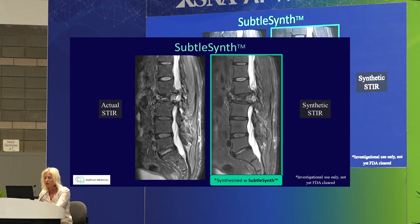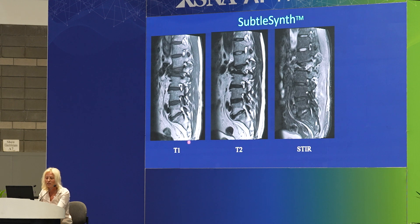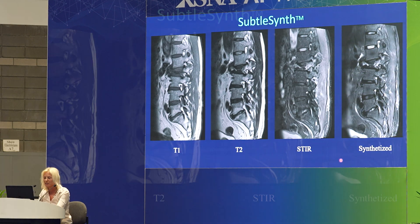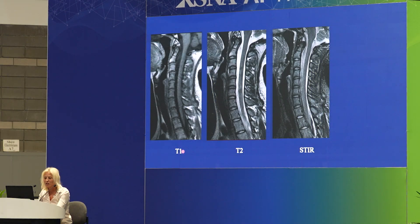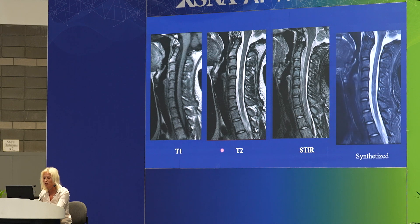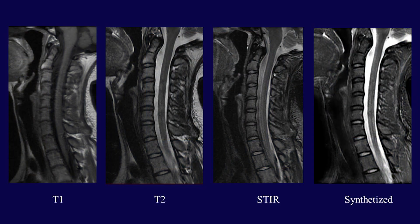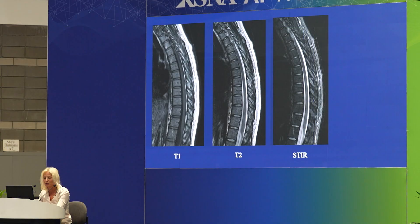Here's the original and here is the synthetic STIR. We use T1 and T2 inputs — here's the original STIR and here is the synthesized STIR showing high image quality. Again T1, T2, here's the STIR — look at the CSF here on the STIR. It really was not an optimal STIR, but when you synthesize it you see it much, much easier. Here's a T1 and T2 input — here's the STIR with some artifact, and this is the synthesized STIR on the right.